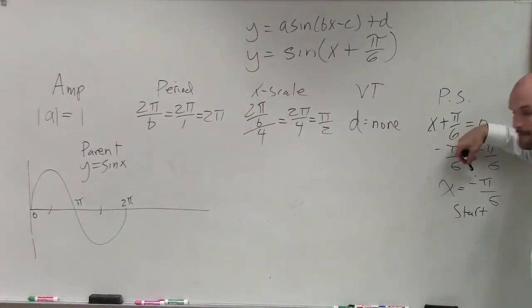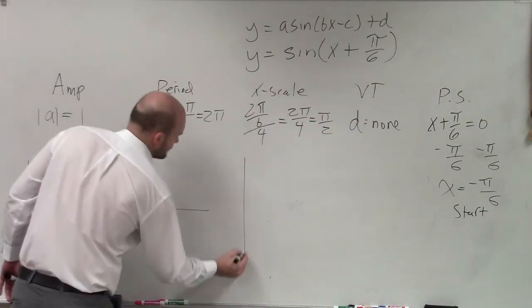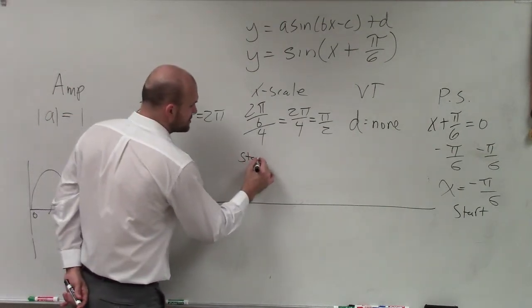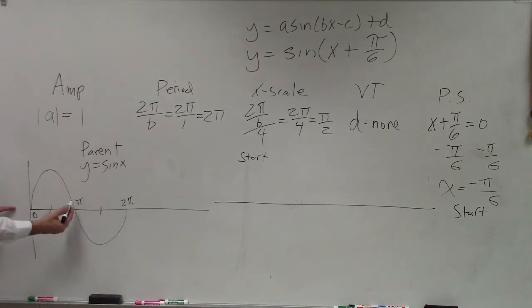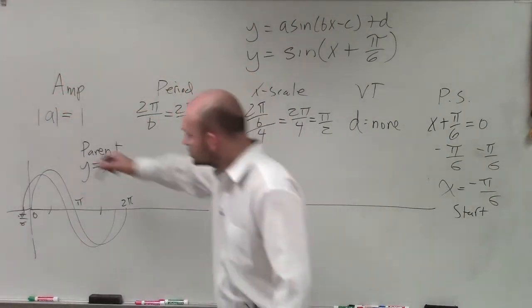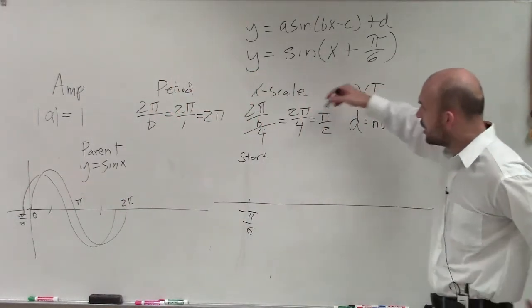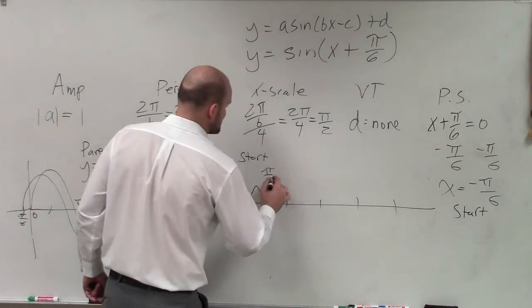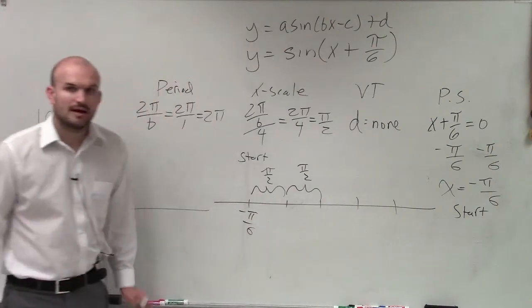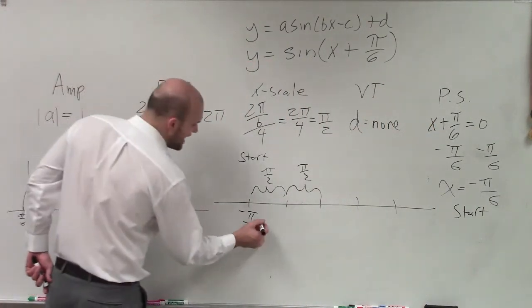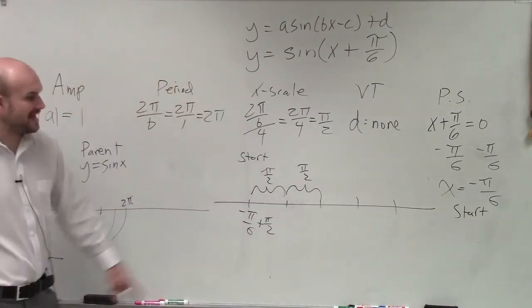However, we're now shifting this graph pi over 6 to the left. So when I want to graph this, forget about the y-axis. Don't worry about the y-axis right now. Let's just say, here's where I'm going to start. I'm going to start at where this graph is shifted. Think about taking this graph and shifting it pi over 6 to the left. So the graph's going to kind of look something like that. So I'm just going to say, you know what? I'm going to make this negative pi over 6. That's where my graph is going to start. It used to start at 0. Now it's going to start at negative pi over 6. Then I look at this and I say, all right, I'm now going to add my x scale. What that means is between each one of my tick marks x is going to be pi halves. And what do each one of these scales represent? They either represent the maximum, the minimum, or another x-intercept on my graph.